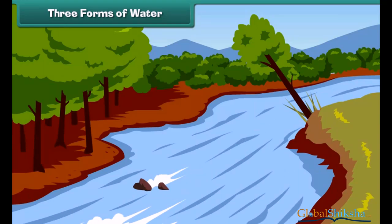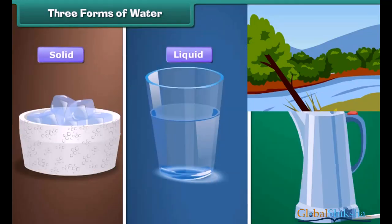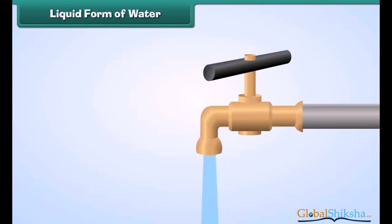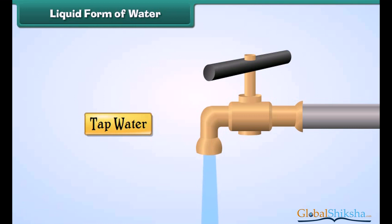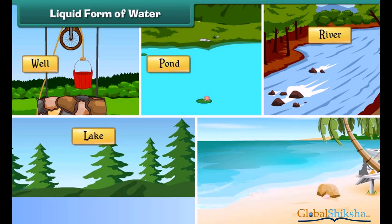There are three forms of water: solid, liquid, and gas. The water we get from taps is in liquid form. Other examples of water in liquid form are water found in wells, ponds, rivers, lakes, and oceans.